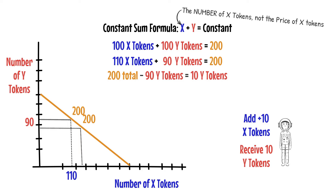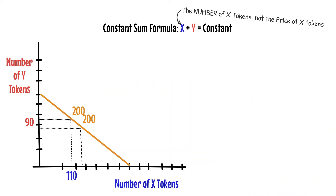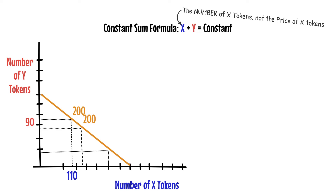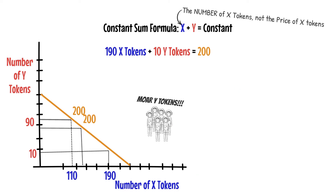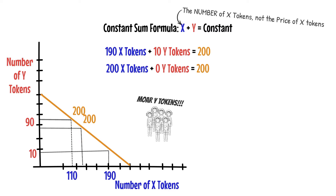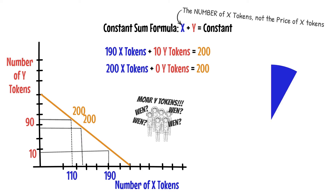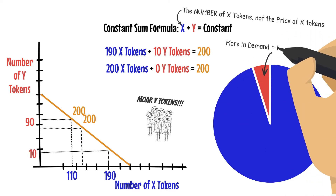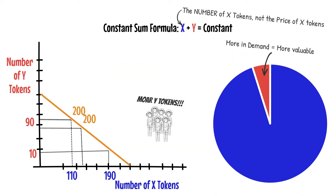This constant sum formula does a great job of maintaining a one-to-one exchange rate, so it sounds perfect for stablecoins. But the constant sum formula has a flaw that prevents it from being used by DEXs for liquidity pool pairs. Imagine only 10 y tokens remain out of 200 total — that suggests traders value y tokens more than x tokens. According to the constant sum formula, someone could buy those last 10 y tokens at the same one-to-one rate, leaving 200 x tokens and 0 y tokens. Traders can drain all of the more valuable tokens out of the pool.